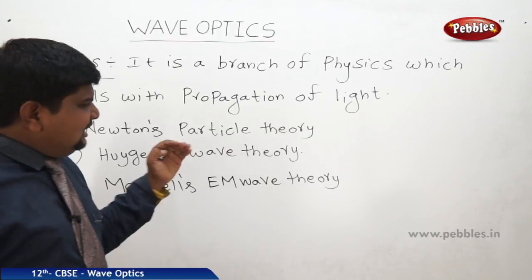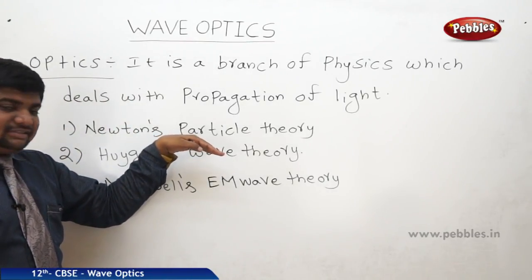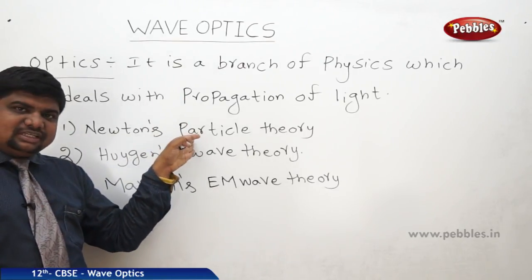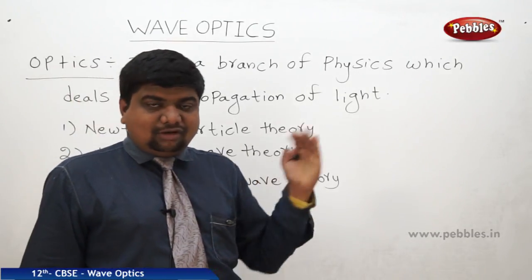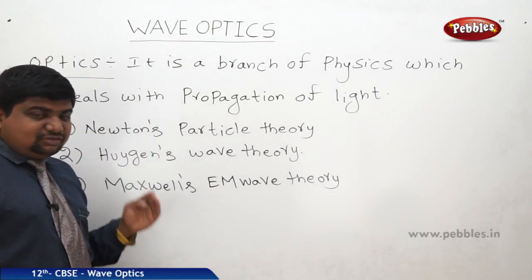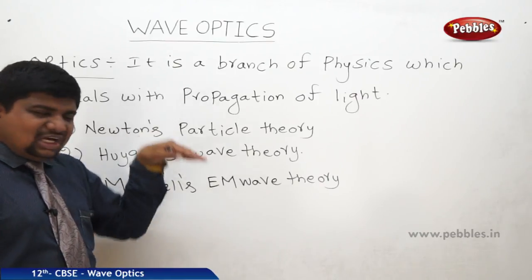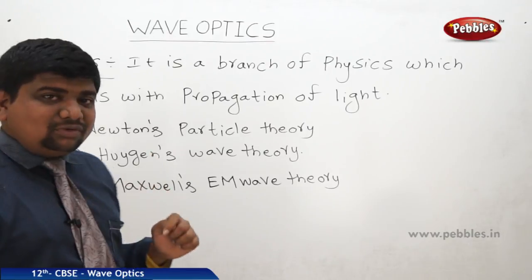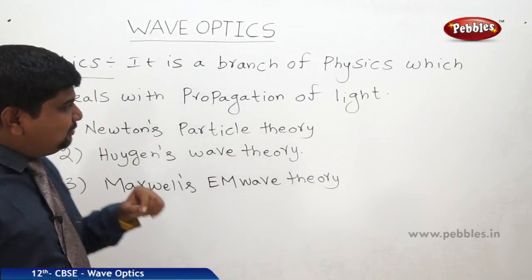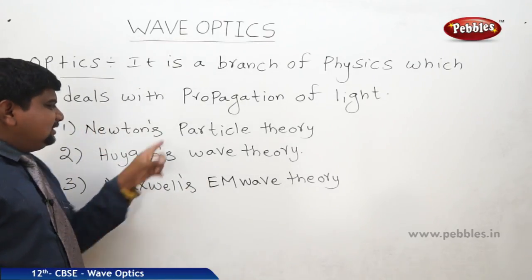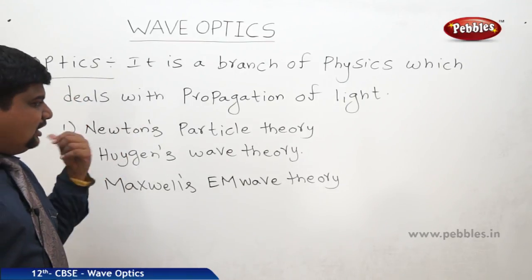Each theory predicts the path of light in a different way. The first understanding about the nature of light was given by Newton's particle concept. The drawbacks of Newton's theory were explained by Christian Huygens. Later, experiments like Compton scattering and the photoelectric effect led to the quantum theory of light, which states that light behaves as both a particle and a wave.